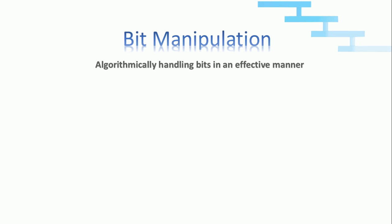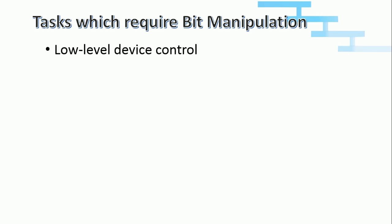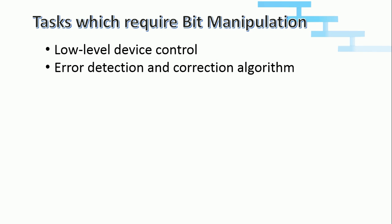There are various tasks which can be performed by bit manipulation. They are, but not limited to: first, low-level device control to handle the microcontroller and other low-level devices. We use bit manipulation. Secondly, error detection and correction algorithms — check my video tutorial on error detection and correction using Hamming code, link in the description.